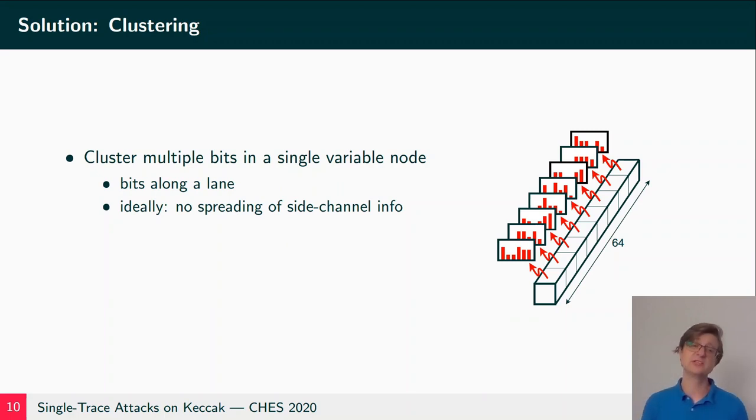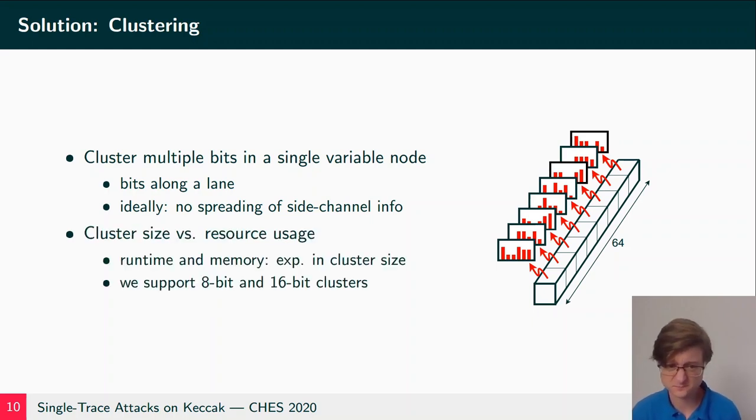So we solve this problem by introducing clustering. We cluster multiple bits into a single variable node. Since we have leakage along the lanes, it's also natural to cluster the bits along the lanes. Ideally, we set the cluster such that no side channel information is spread over multiple clusters. Ideally we would like to have the clusters as large as possible, but there we have runtime and memory considerations because these are exponential in the cluster size. Which means we support 8 and 16-bit clusters.